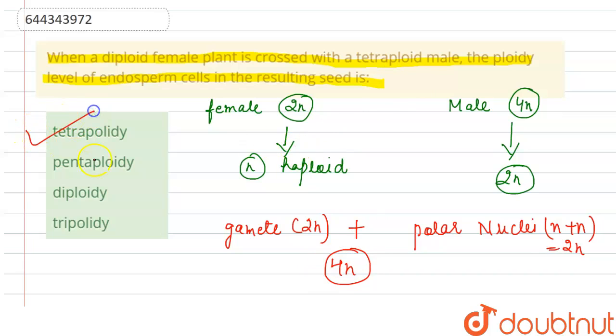That gives us tetraploidy — Option 1. Penta means it should be 5, diploid means it should be 2, and tri means it should be 3. So the correct answer is tetraploidy.